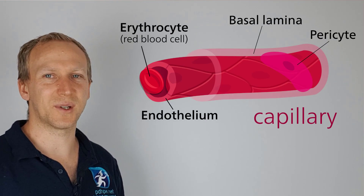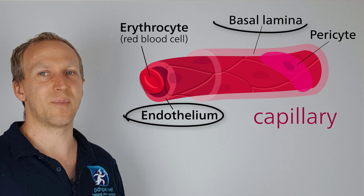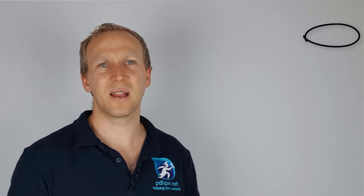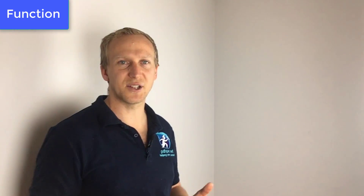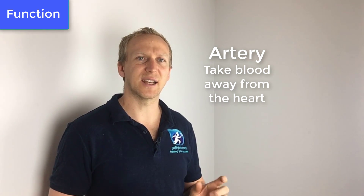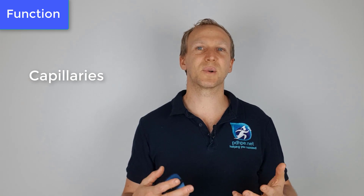Capillaries have an endothelium and a basal lamina. In terms of function: the heart pumps blood around the body; arteries take blood away from the heart and help pump it further; veins bring blood back toward the heart; and capillaries are thin and porous to allow for the exchange of gases, nutrients, and waste products.